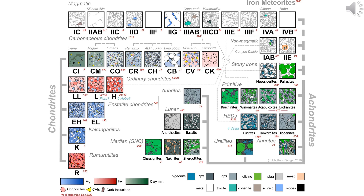Classification by meteorite group. Chondrites: primitive meteorites containing chondrules — small spherical mineral inclusions — and typically rich in iron and nickel. Achondrites: meteorites with a homogeneous mineral composition, lacking chondrules and originating from bodies that have undergone melting processes. Metallic and iron meteorites: primarily composed of iron and nickel with a characteristic Widmanstätten pattern.